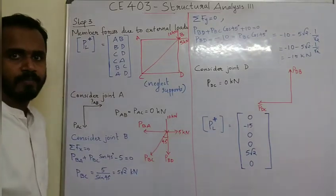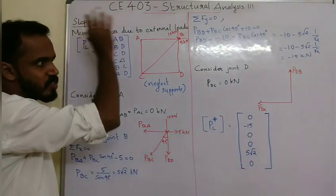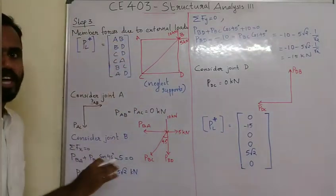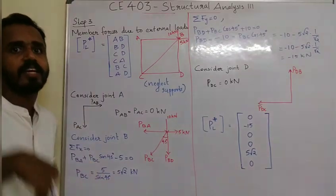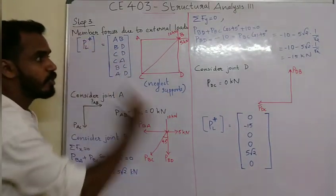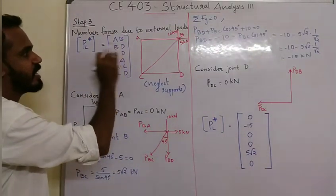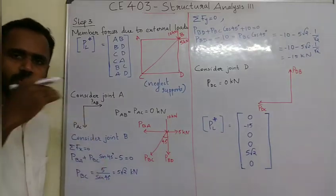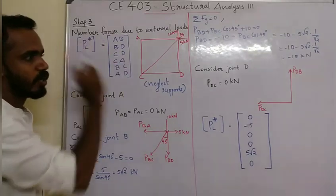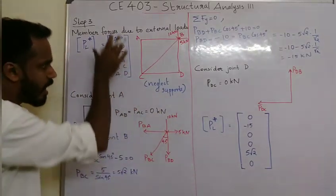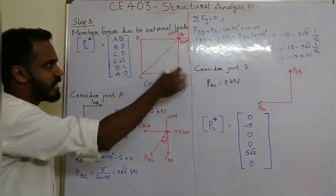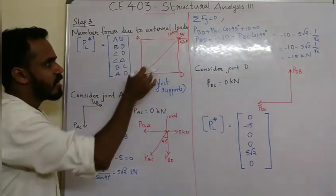Follow me — we consider the member forces. I recommend this order: members AB, BD, DC, CA, BC, and AD. Take this order for the member force calculations.